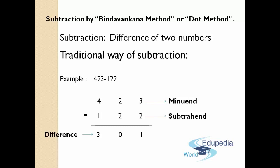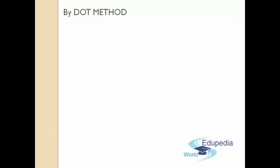So this is the traditional way, or old-fashioned way, of doing subtraction. Now let us see how we are going to do this subtraction using the Bindhavankana method. Let us take the same example by the dot method — 423 minus 122. First of all, as usual, we have to set them in specific rows and columns according to their place values like this: 423 minus 122.